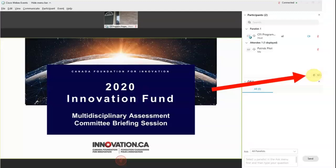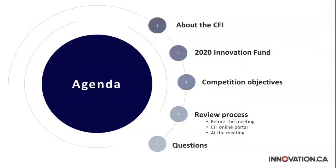We are recording this session as we have recorded the other sessions and we will make those available on our website. So if you ever want a refresh and to listen to this again, you'll have that opportunity. The slides themselves, the deck will be available online as well. So what do we want to cover today? We very briefly want to talk about the CFI — the Canada Foundation for Innovation — give you a bit of information about the 2020 Innovation Fund, talk about the competition objectives. But the focal point of this meeting is to talk about the MAC process itself and to give you a tour of the CFI online portal CAMS and how the meeting will take place.